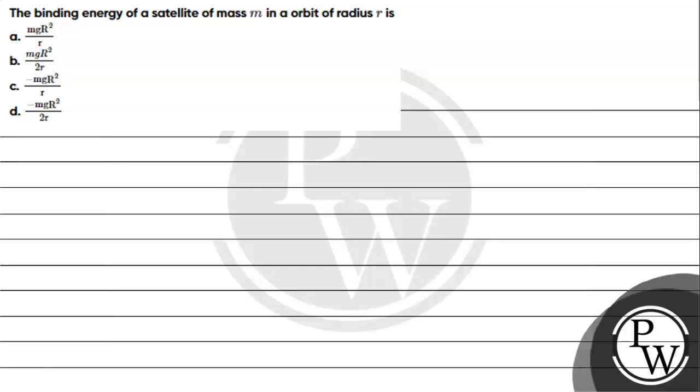Hello, let's read the given question. The question says: the binding energy of a satellite of mass m in an orbit of radius r is: Option A: mg R² upon r, Option B: mg R² upon 2r, Option C: minus mg R² upon r, Option D: minus mg R² upon 2r.